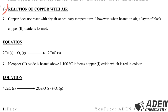We start with part A — the first chemical property of copper: reaction of copper with air. Copper does not react with dry air at ordinary temperatures. However, when heated in air, a layer of black copper(II) oxide is formed. The equation for that reaction: 2Cu(s) + O₂(g) → 2CuO(s). If copper(II) oxide is heated above 1100°C, it forms copper(I) oxide which is red in color.